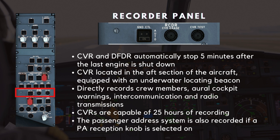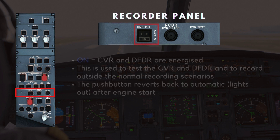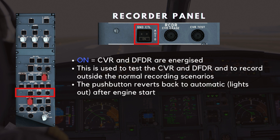The cockpit voice recorder is located in the aft section of the aircraft, equipped with an underwater locating beacon. It records direct conversations between crew members through a cockpit area microphone and boom microphones, oral cockpit warnings, intercommunication, and radio transmissions. The CVR is capable of 25 hours of recording. The passenger address system is also recorded if a PA reception knob is selected on. When the ground control push button is selected on, the CVR and DFDR are energized — this is used to test the CVR and DFDR and to record outside the normal recording scenarios.